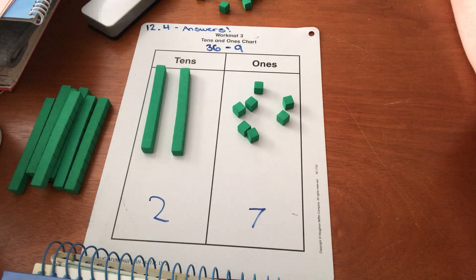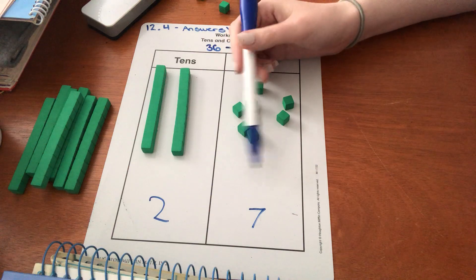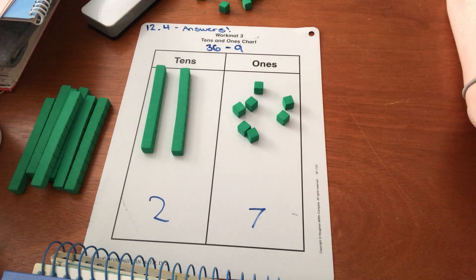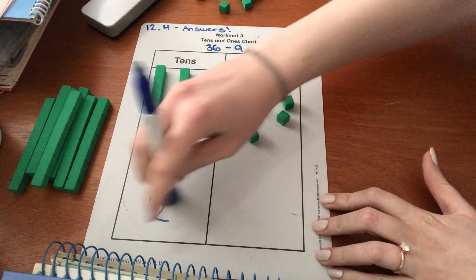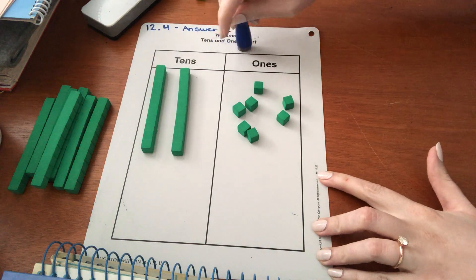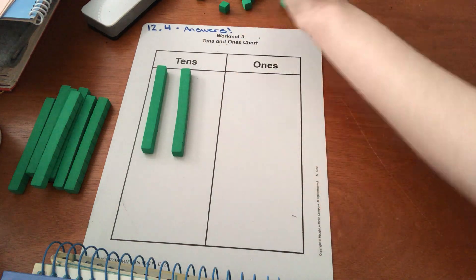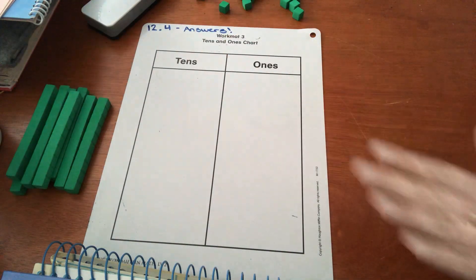Two tens and seven ones is the answer to the third column. So what's the difference? What is the answer to our subtraction question? 27. Awesome. Great job. Let's erase these and let's go on to the next one.